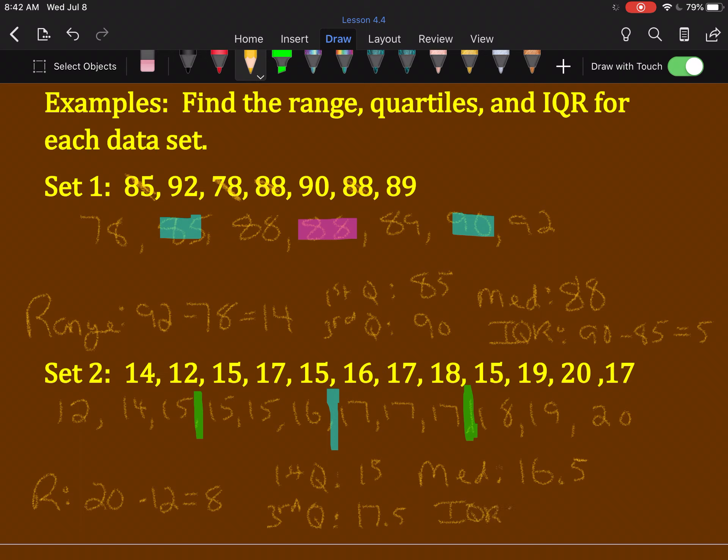The interquartile range, then, is 17.5 minus 15, which is 2.5.